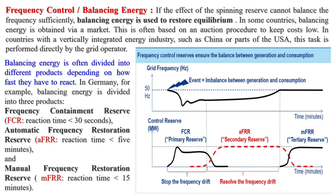Scheduling and Dispatch refers to the process of planning and controlling the operation of a power system. It involves determining which power plants should be operating at any given time, and at what output level, to meet the fluctuating demand for electricity.